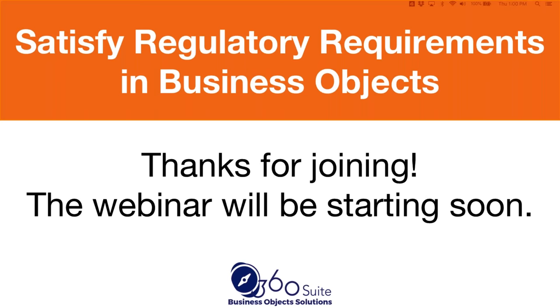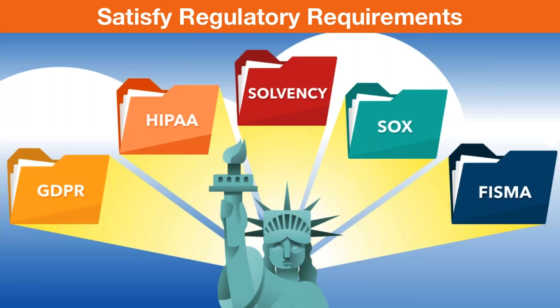Good afternoon everyone, welcome to the 360 Suite Business Object Solutions webinar on satisfying regulatory requirements in Business Objects. GDPR, HIPAA, Solvency, SOX, FISMA — all of these regulations can have impacts on Business Objects, and yet complying with those regulations is generally a known risk. Today we're going to dig into how the 360 Suite can help you satisfy those regulatory requirements easily, quickly, and in a lot of ways, automated.